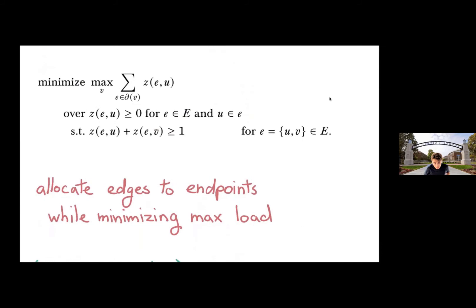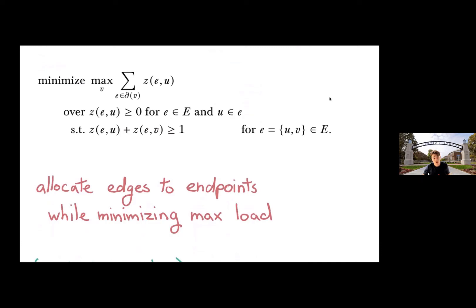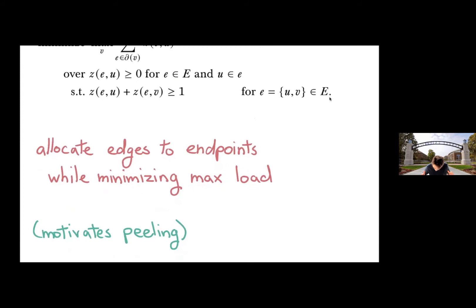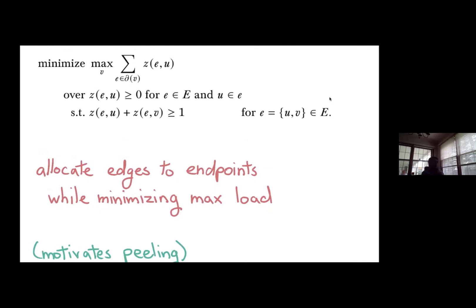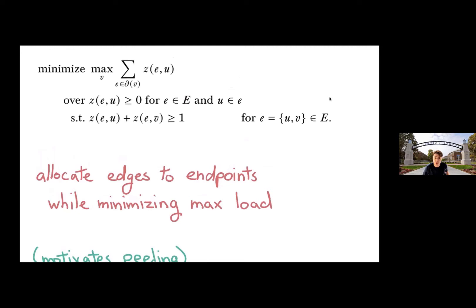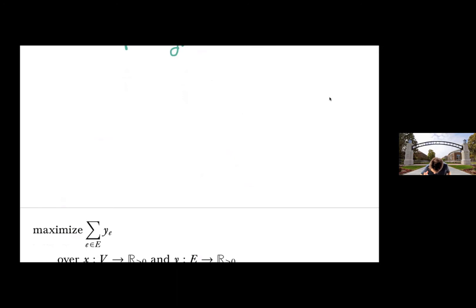So this LP is trying to take each edge and assign it to one of the two endpoints to minimize the maximum load on any vertex. So this also motivates peeling and also motivates iterative peeling, in terms of trying to keep that maximum load small. The dual is to orient the edges so that you minimize the max in-degree. Maybe that's a better way to put it. Yes. You can think of it as orienting the edges to minimize the maximum in-degree.